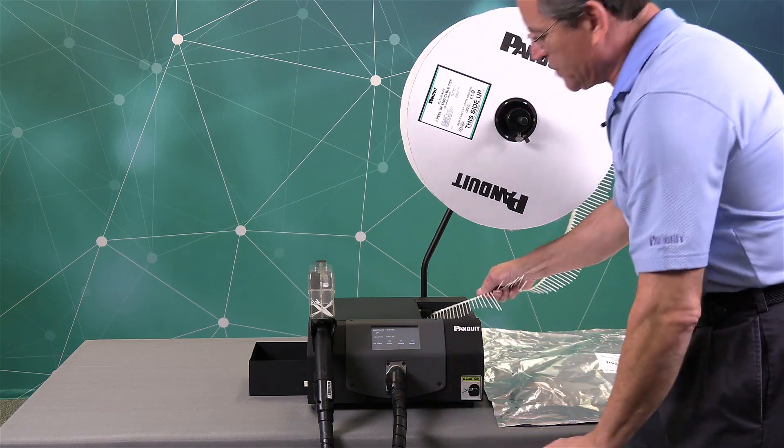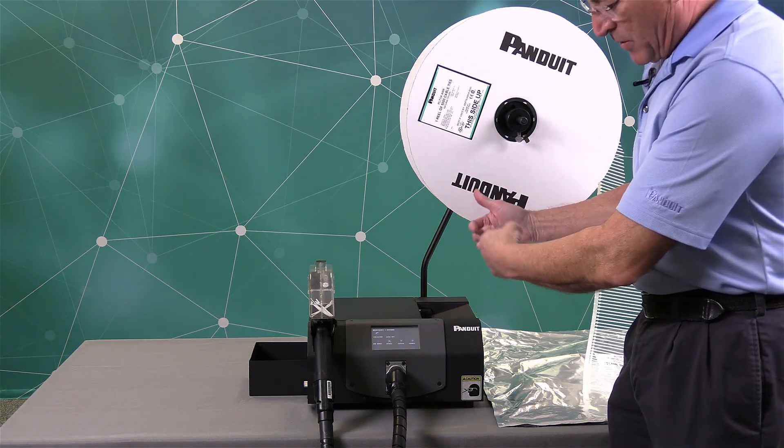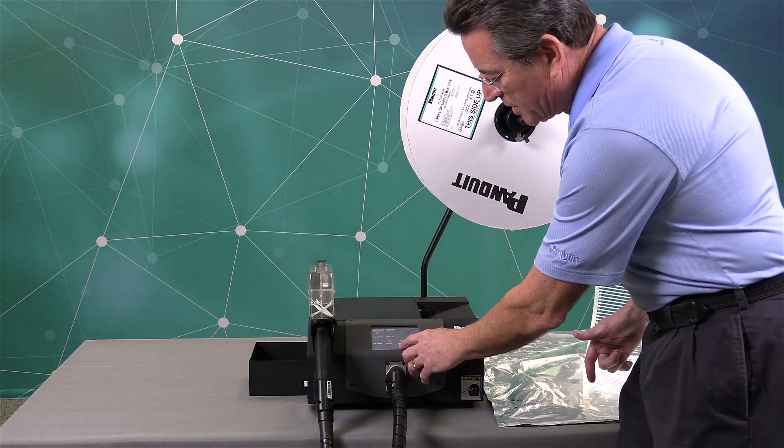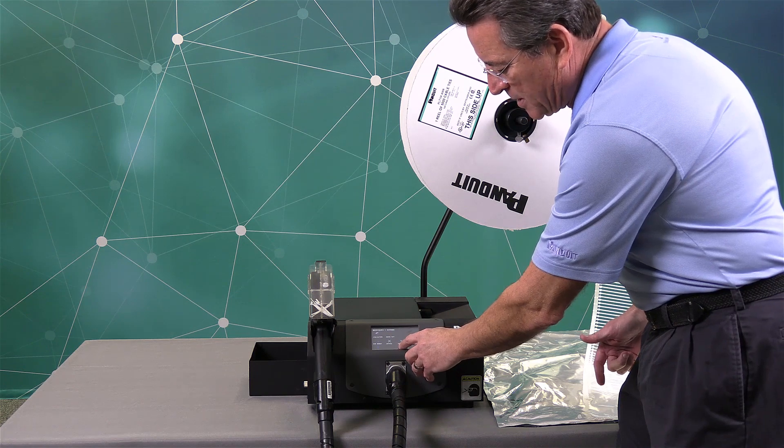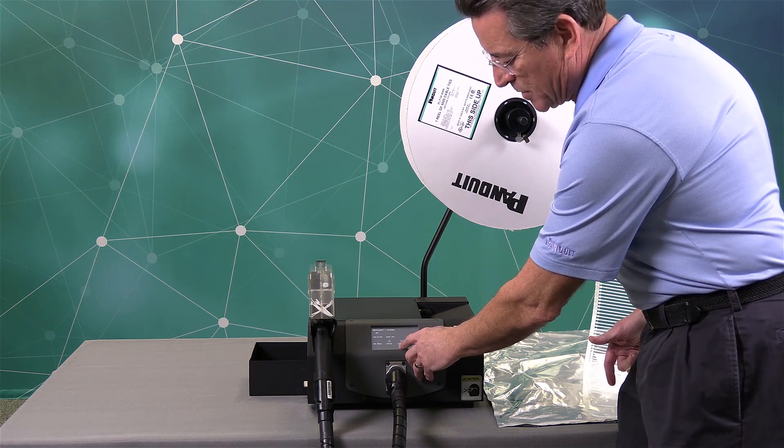Once you've hit the unload button four times, you can pull the strip out. There are still ties in the unit. So you want to press and hold the unload button. Just keep hitting the unload button until it drops all the ties out of the unit.